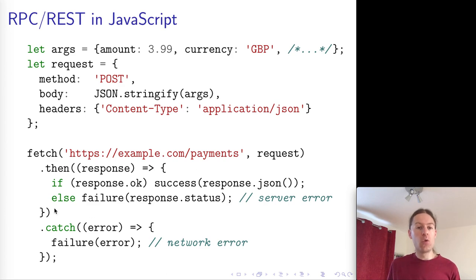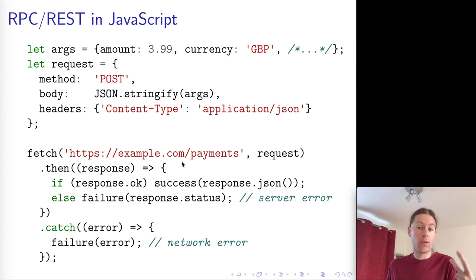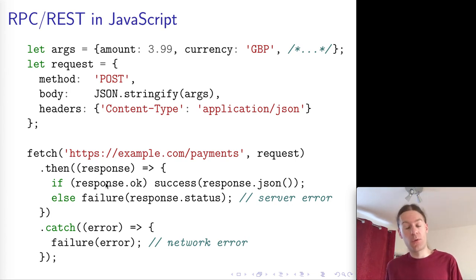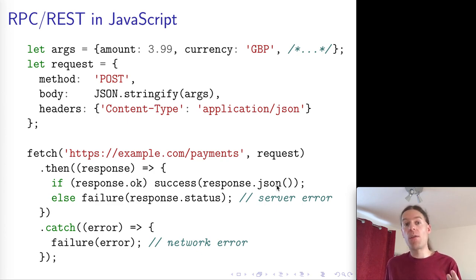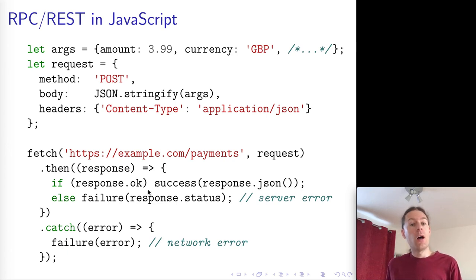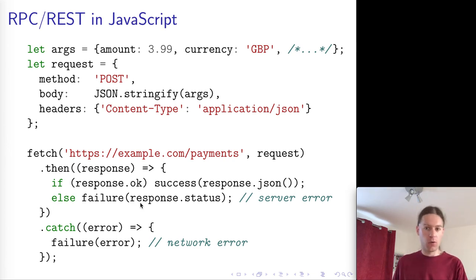You take the arguments and turn them into a JSON string using JSON.stringify, tell the server the content type is JSON, and then call the URL — for example, example.com/payments — sending an HTTP request with all the specified details. There are two handlers: the then case is a callback function which gets called if the request resulted in a successful response. You can look at the response status code to determine success, unmarshall the JSON response using the JSON parse function, and call a success or failure function accordingly. You can do more detailed error handling, but that's the general idea.